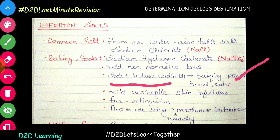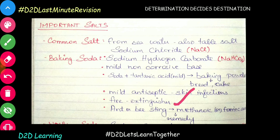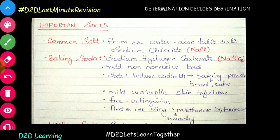We use baking soda as well. It is a mild antiseptic. We also use baking soda as a fire extinguisher. If we don't want ant or bee stings — they inject formic acid or methanoic acid — we put baking soda on it to neutralize the formic acid.